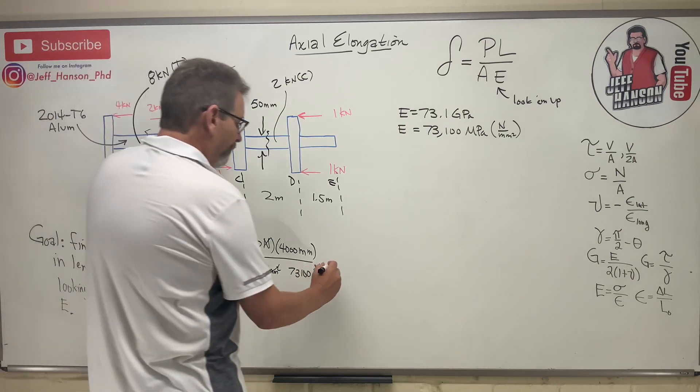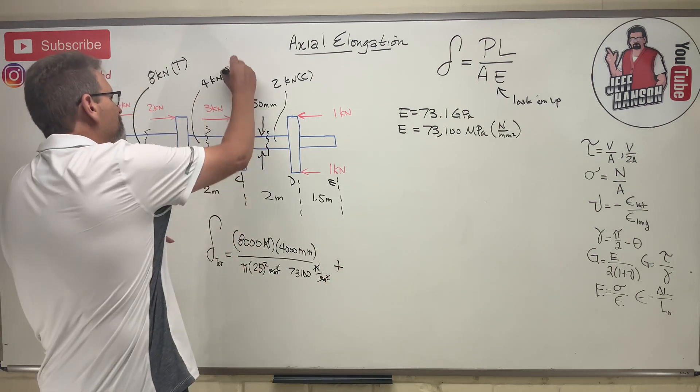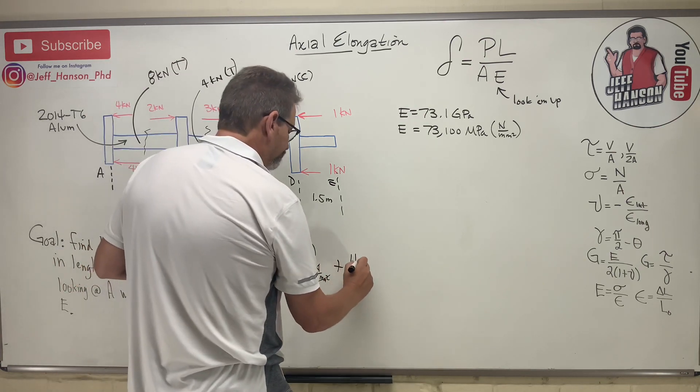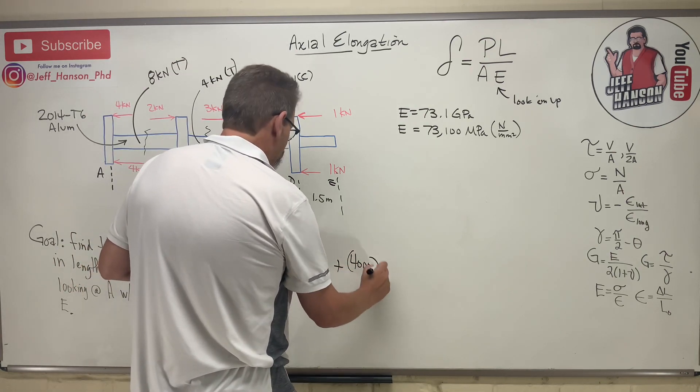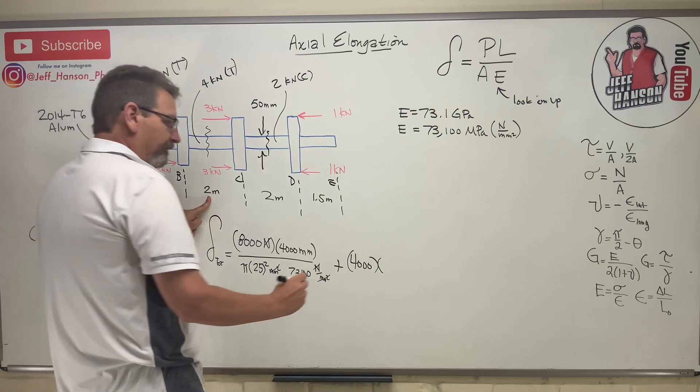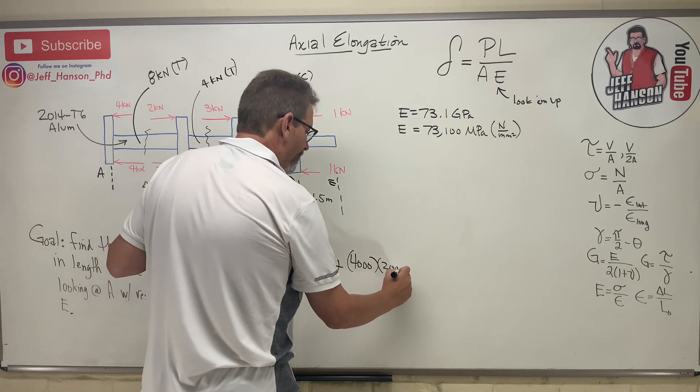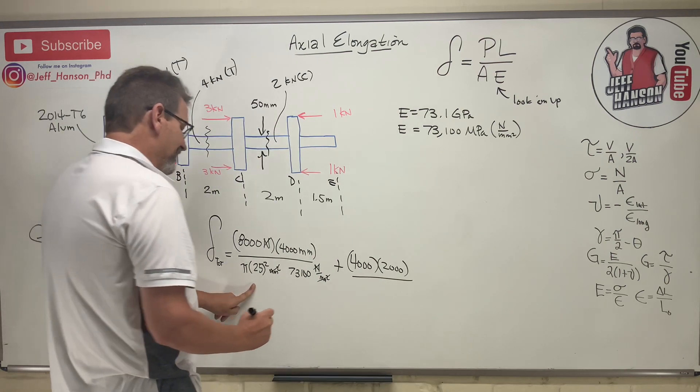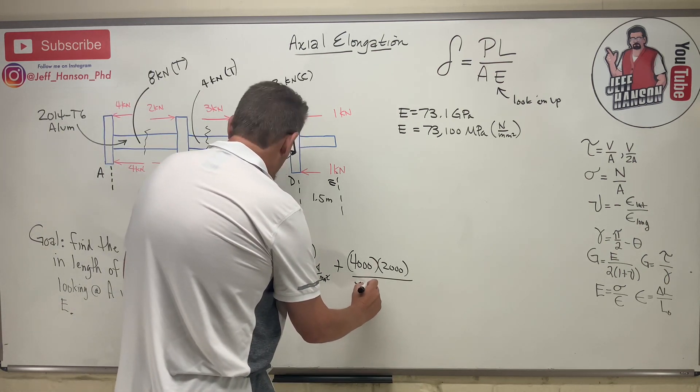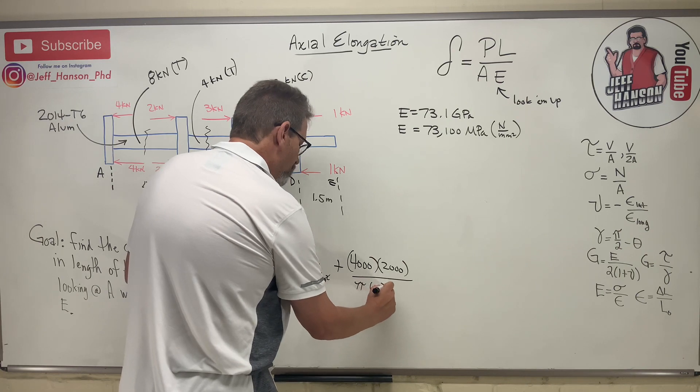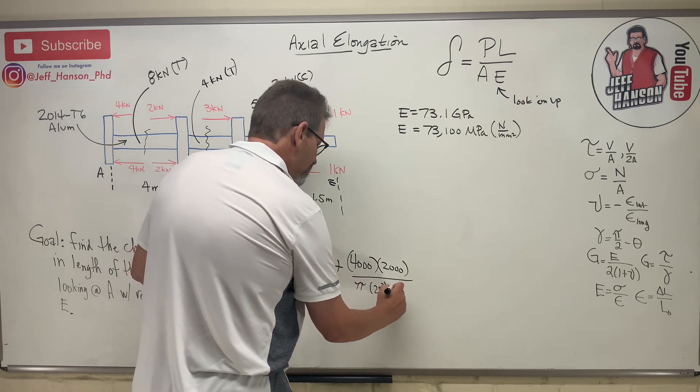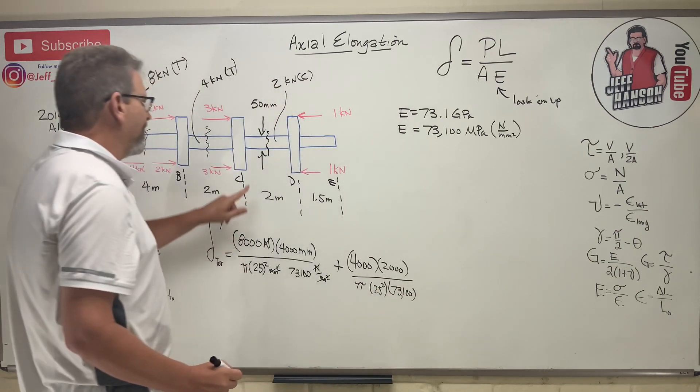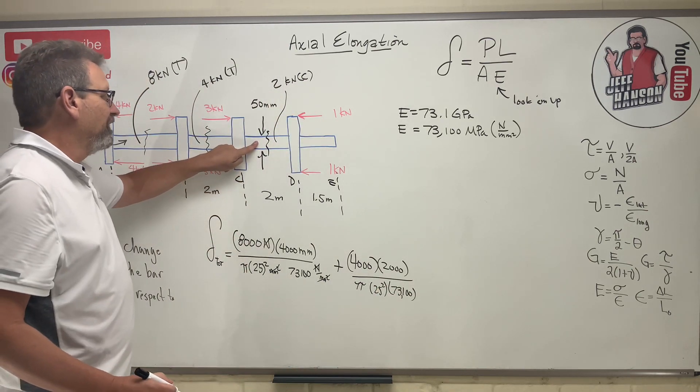Next section, also positive, stretching - tension, tension. It's going to be 4,000 times the length of that guy, 2,000, divided by the same exact thing: pi times 25 squared times 73,100.